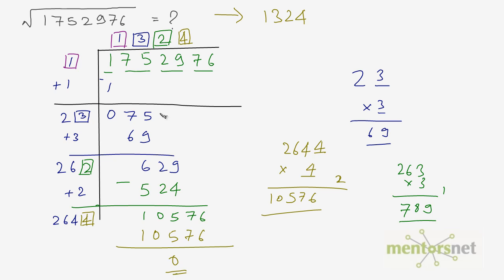So one thing I want to clear here is the remainder is 0. That's why this is a perfect square. Had the remainder not been 0, this wouldn't have been a perfect square.